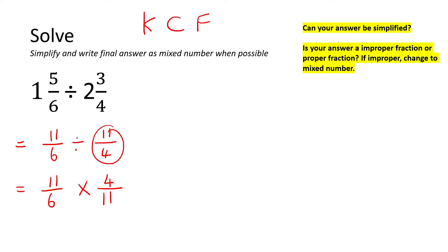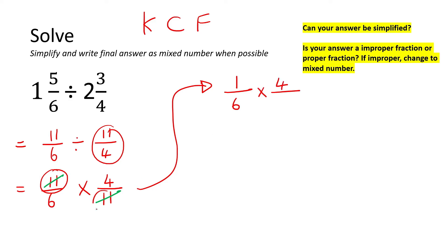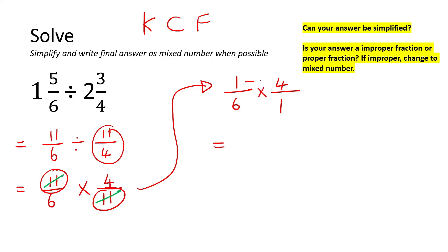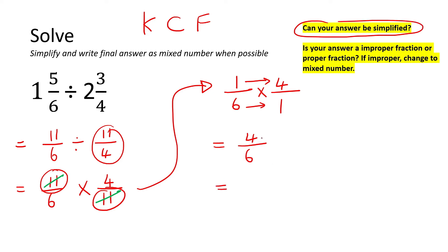When you are multiplying fractions you can always cancel numbers at the top with numbers at the bottom. So I'm going to immediately cancel those two 11s. What we now have is a 1 at the top, then a 6 and a 4 at the bottom, and a 1 at the bottom. These numbers are very small, so I'm just going to say top times top and bottom times bottom, giving us 4 over 6. Can the answer be simplified? Yes. 4 is the same as 2 times 2, and 6 is the same as 3 times 2, so those twos cancel and the answer is 2 over 3.